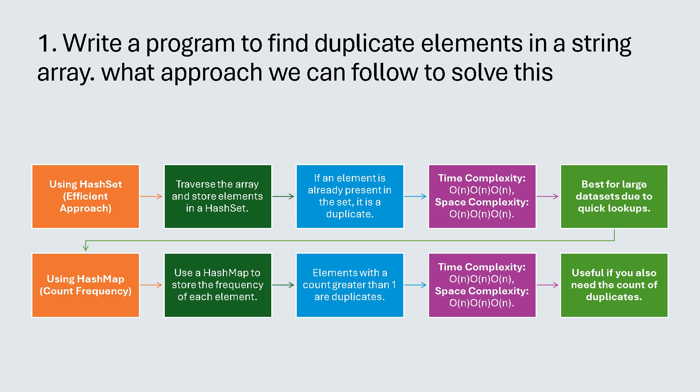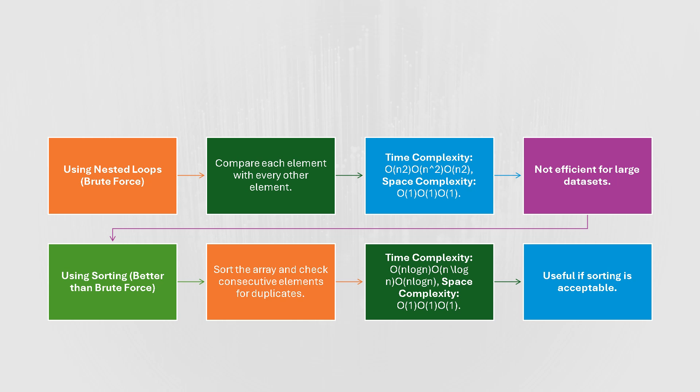The HashSet approach is basically used for large datasets. Another approach is using a HashMap — it counts the frequency by storing the frequency of each element, and elements with a count greater than one are the duplicates. We can also use nested loops, which I feel is the best approach because it's not that complex. We don't have to dive deep into arrays, HashMaps, or collections. We compare each element with every other element to fetch duplicates, though it is not that efficient for large datasets.